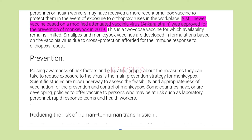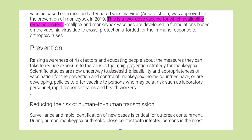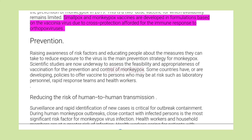A still newer vaccine based on a modified attenuated vaccinia virus, Ankara strain, was approved for the prevention of monkeypox in 2019. This is a two-dose vaccine for which availability remains limited. Smallpox and monkeypox vaccines are developed in formulations based on the vaccinia virus due to cross-protection afforded for the immune response to orthopox viruses.